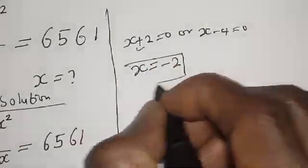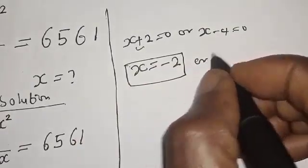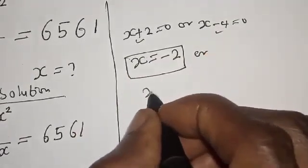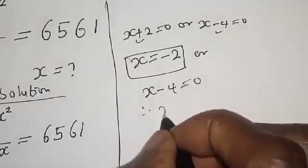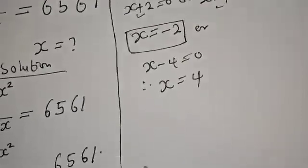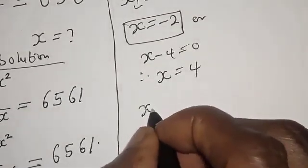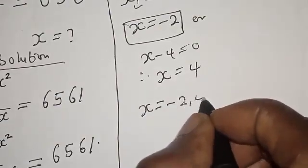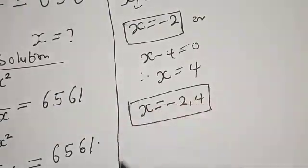From S minus 4 equals 0, we get S is equal to 4. So the final answers are S is equal to minus 2 and S is equal to 4.